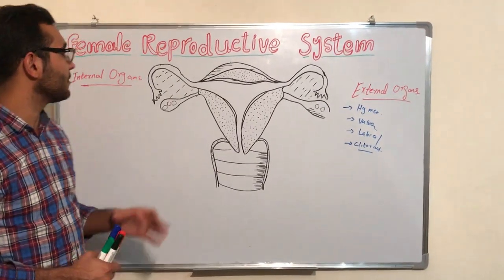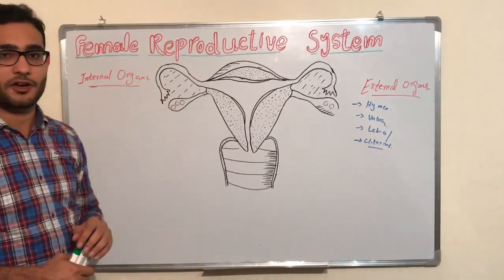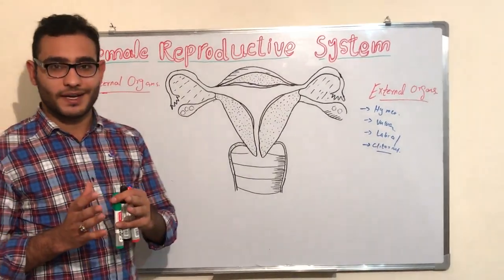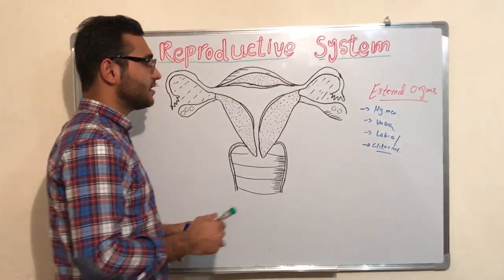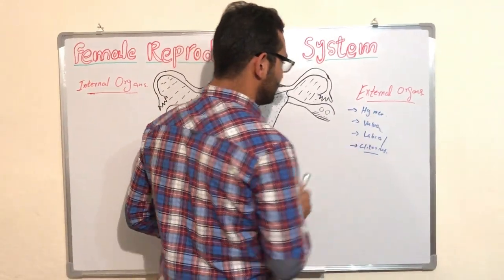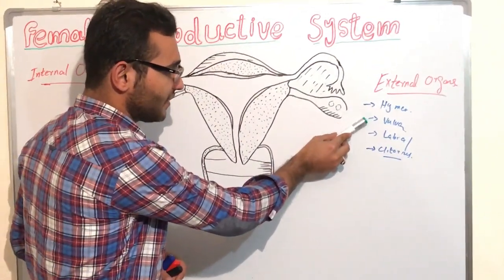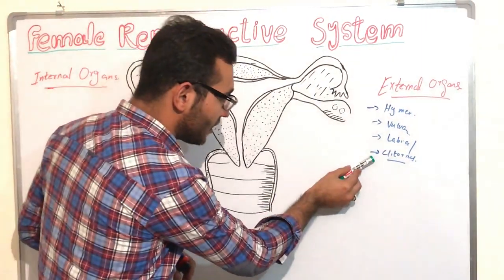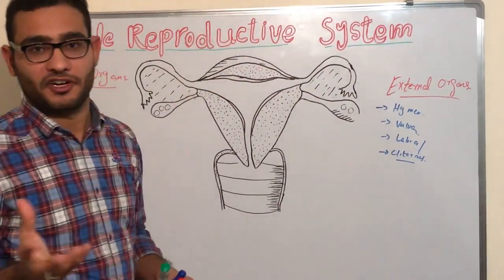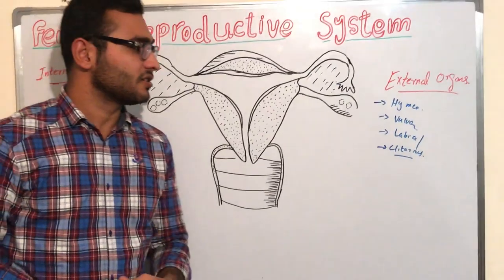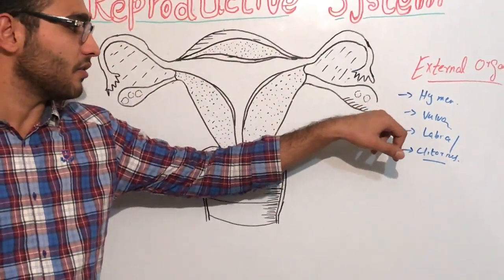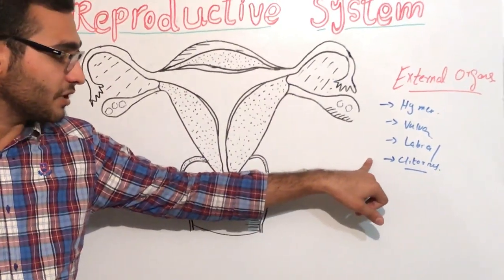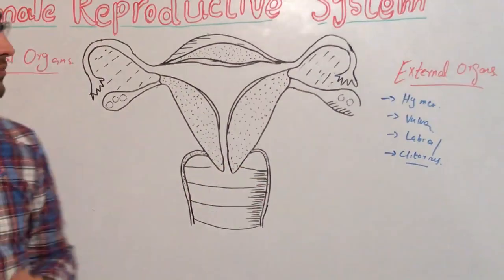Today our topic is about the female reproductive system anatomy. The female reproductive system consists of external organs and internal organs. The external organs consist of the hymen, vulva, labia majora, labia minora, clitoris, and bulbus cordis.